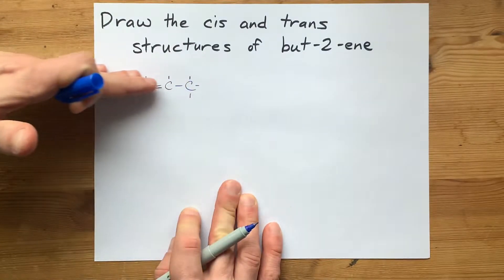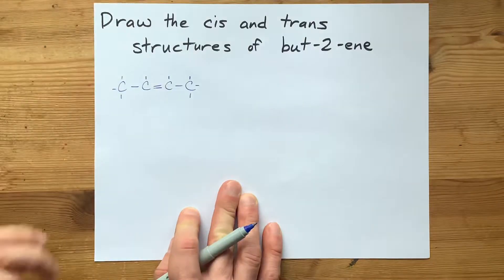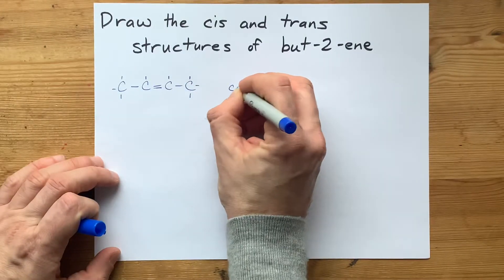You slice the double bond this way, both the hydrogens are in this direction. That is the cis isomer.